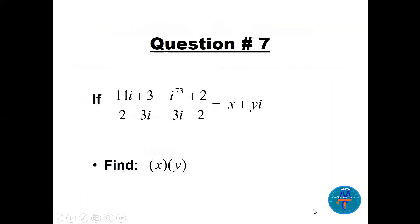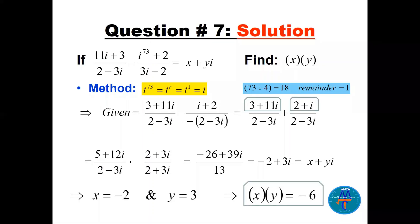Question 7: We have a complex number expression — one complex number minus another, divided by something — equal to x + yi. We need x times y. Simplify the left side until we get standard form a + bi. The key issue: we have a fraction with a minus sign between terms, so we need a common denominator. We must change one of the denominators to match the other.